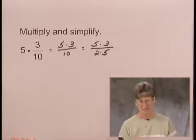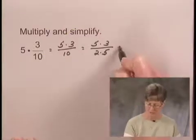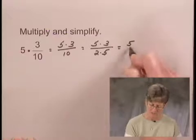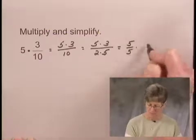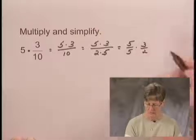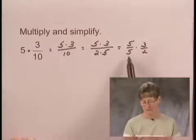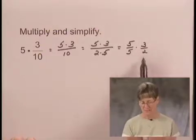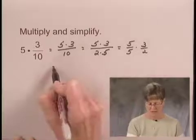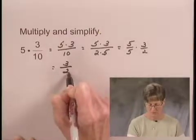Now there's a factor of 5 common to the numerator and the denominator. So I can rewrite this as 5 over 5 times 3 over 2. 5 over 5 is equal to 1. So I have 1 times 3 halves, or just 3 halves for the product of those two numbers.